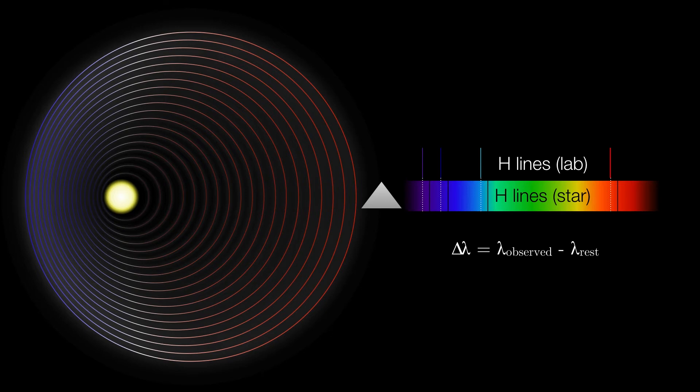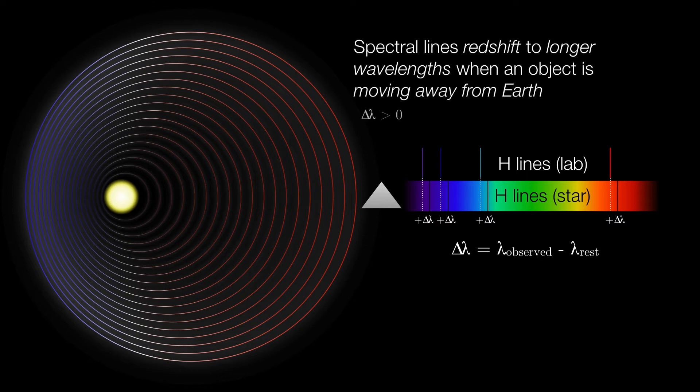On the other hand, if the star is moving away from us, now the spectral lines of the star are going to be redshifted. If we subtract the rest wavelength from the observed wavelength, we now get some positive number. So spectral lines will always redshift to longer wavelengths when an object is moving away from Earth, and its Doppler shift is going to be positive in value.